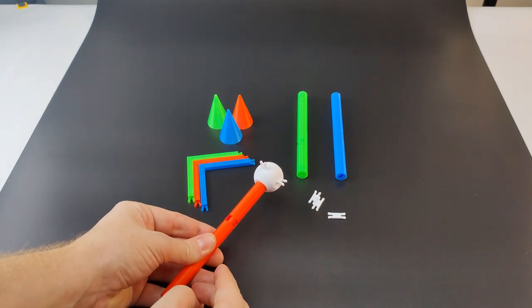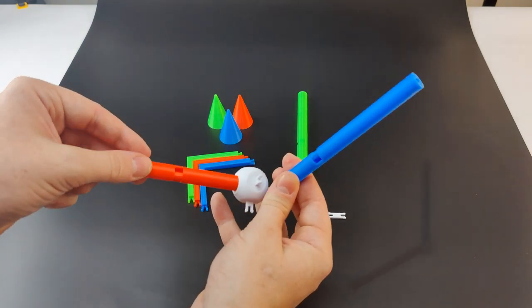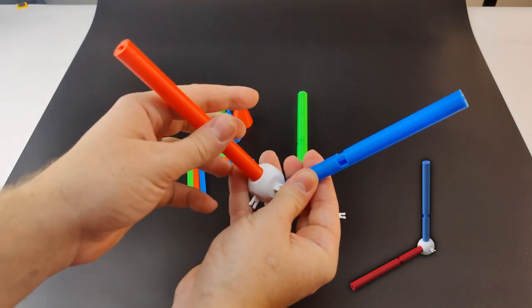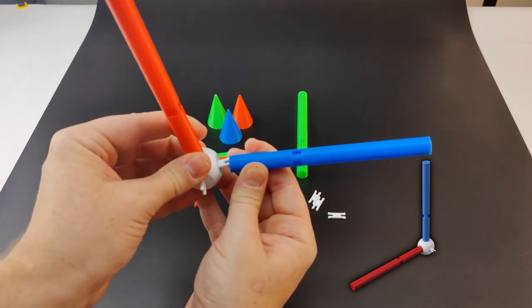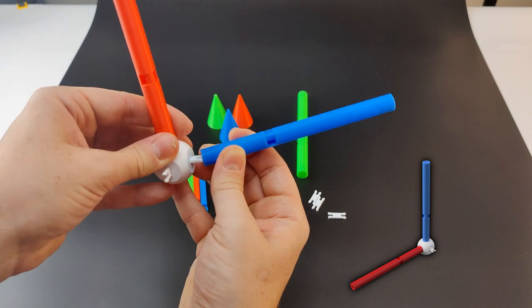Now we'll pick our up axis. I'll use blue. If you want to use green you can. They are interchangeable. We'll take our up z-axis and clip it on making sure to keep those two holes aligned with the other two axis directions.